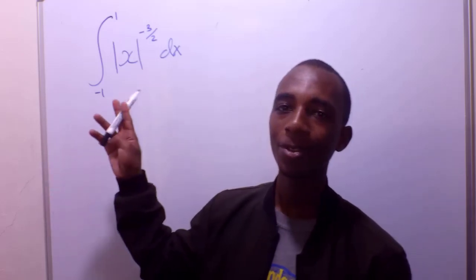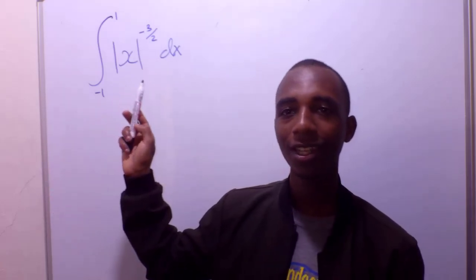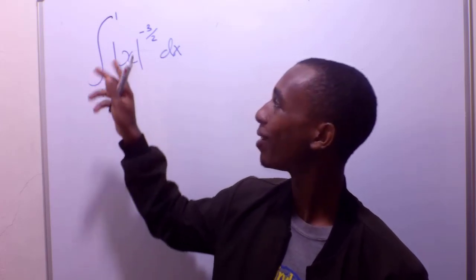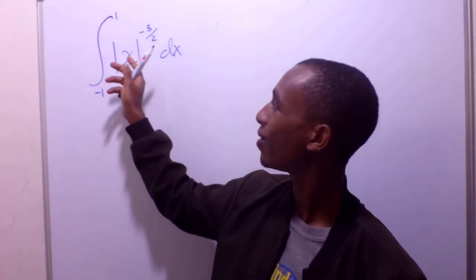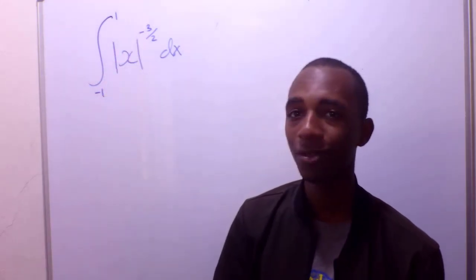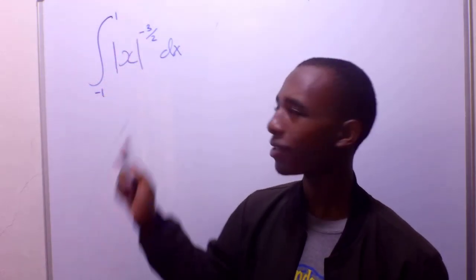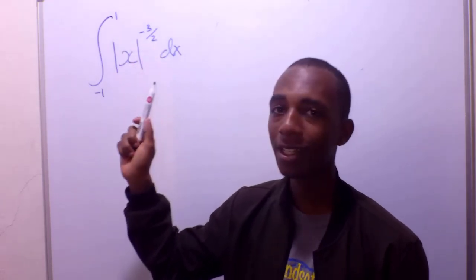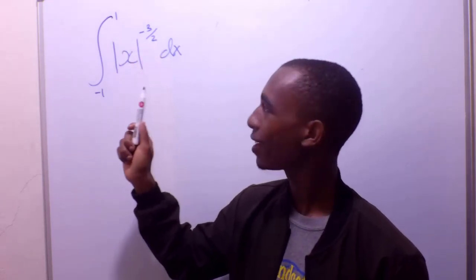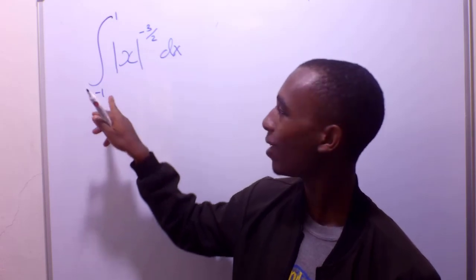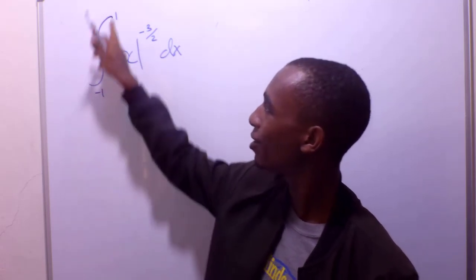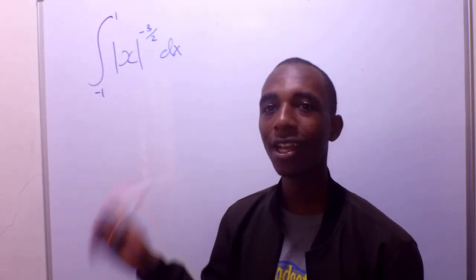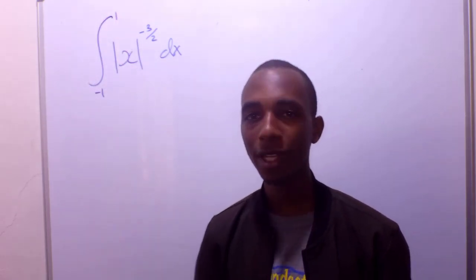For this video we are going to take the integral from negative 1 to positive 1 of the absolute of x to the power negative 3 over 2. This function is not defined at x equals 0, and yet our range of limits contains 0. So this is an improper integral.